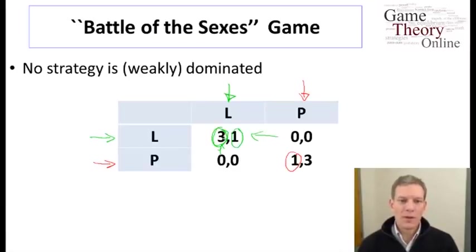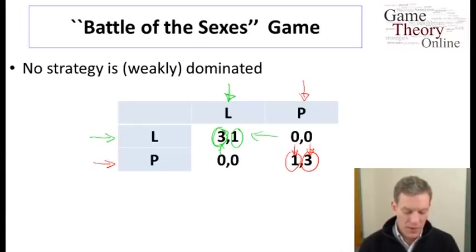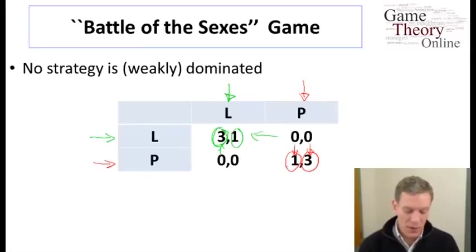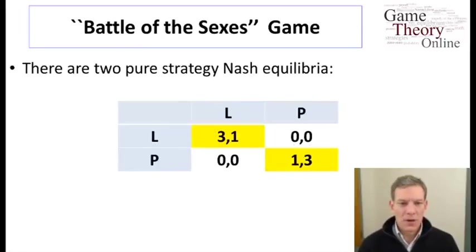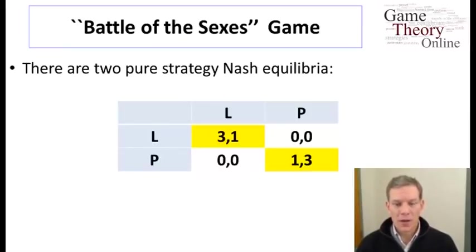That obviously favors one of the players — the row player gets a higher payoff from L,L than the column player does. The structure of this game is such that if we reverse things and instead have the players choosing P,P, that's also going to be an equilibrium. We end up with a best response of P for both players when each expects the other to choose P. So in this game there are two pure strategy Nash equilibria: L,L and P,P. It's basically a coordination game. There will also be one in randomization that we'll talk about later, but for now the pure strategy equilibria are both coordinating on L or both coordinating on P.